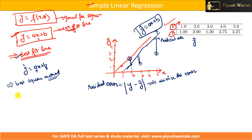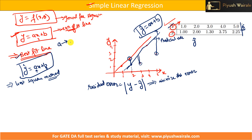In the gate exam, they can ask multiple questions based on simple linear regression. You have to find out the equation of a line — the best fit line. They can give a data set and you need to find the equation, meaning you need to find the value of a and b. Or they can ask for the predicted value when x equals 6 or 7. The value of a is called the regression coefficient, which is basically the slope of the line.